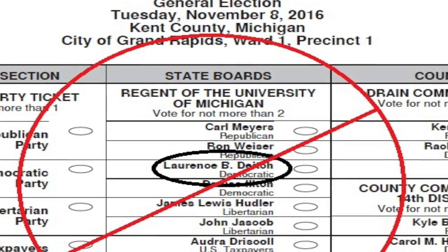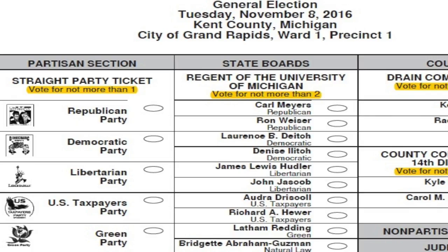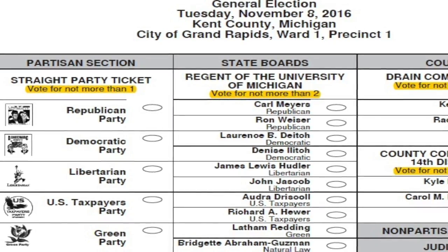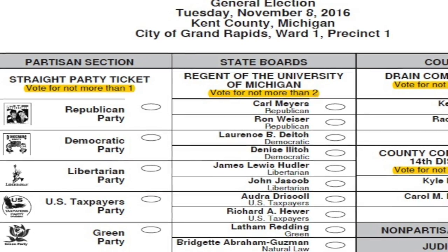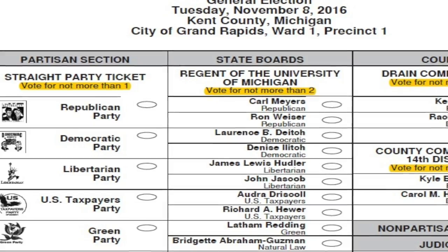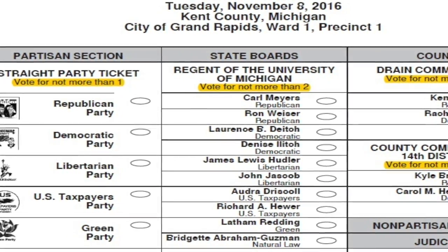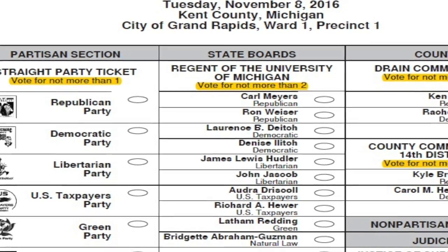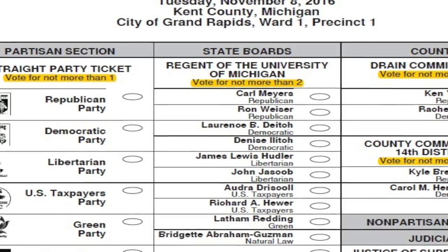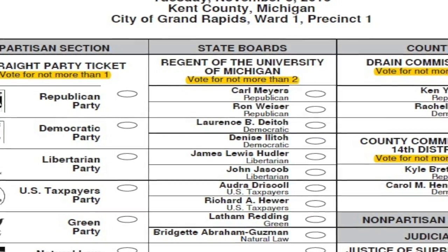Another thing you should look for on the ballot is to check for how many positions are available for each office. You'll notice under the heading of each office, whether it's partisan or nonpartisan, there is a limit to the number of seats that are available to select. Please ensure that you do not overvote your ballot — please read under each heading how many votes you can cast for that particular office.